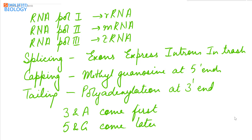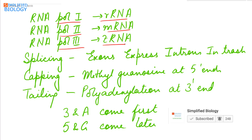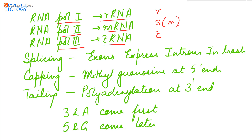To remember the RNA polymerases: RNA polymerase 1 is for ribosomal RNA, 2 is for messenger RNA, and 3 is for transfer RNA — think of the letters R, S, T alphabetically, where S is replaced by M for messenger. For splicing: exons express themselves while introns are removed — 'exons express, introns in trash.'